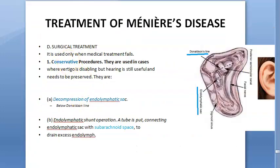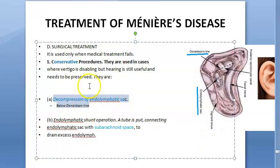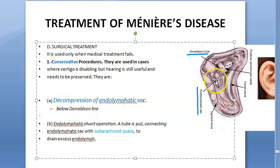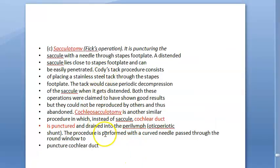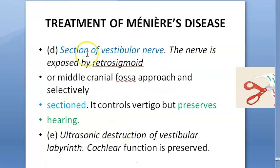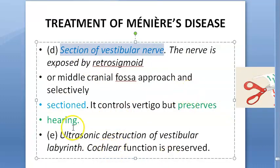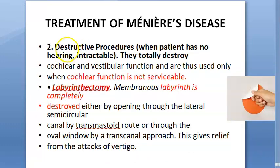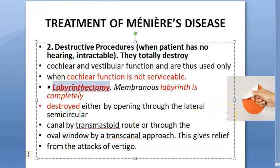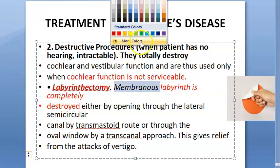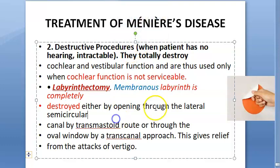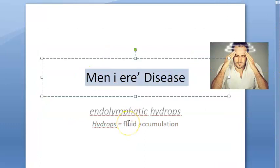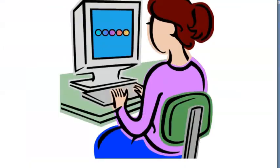Actual surgeries: decompress the endolymphatic sac below Donaldson's line; place a shunt from the endolymphatic sac to the subarachnoid space to drain excess endolymph; sacculotomy or cochleosacculotomy; section the vestibular nerve while preserving hearing; ultrasonic destruction of the vestibular labyrinth. Lastly, labyrinthectomy — complete destruction of the membranous labyrinth — is done only when the patient already has no hearing. That concludes the treatment of Ménière's disease.